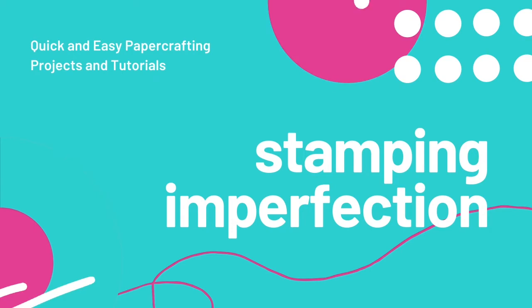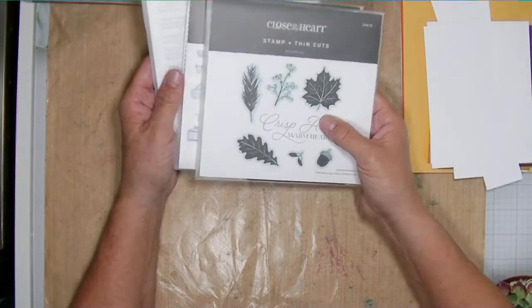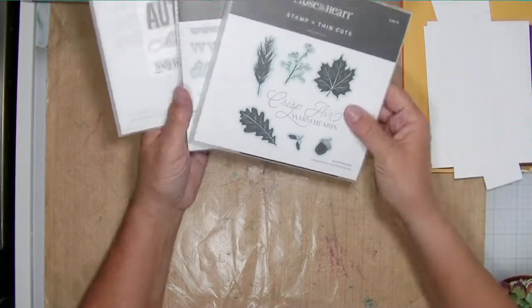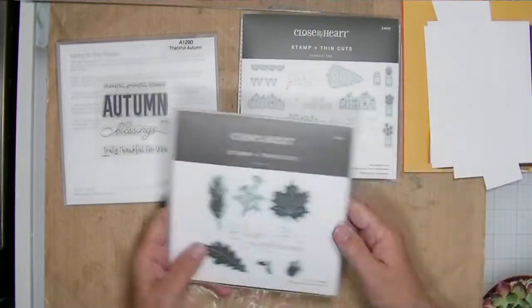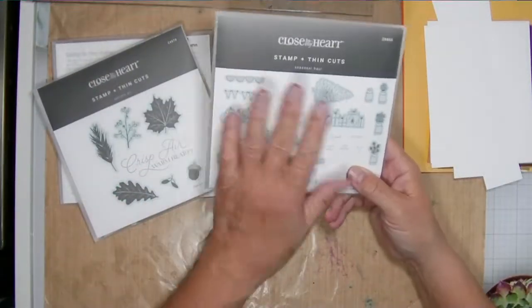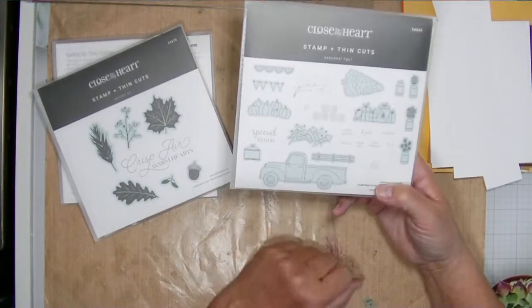Hi friends, welcome to the October card hopping YouTube hop. You'll find the link to the next person in the description of my video below. And today our theme is fall and the technique I'm using is a geometric pattern.